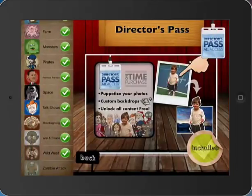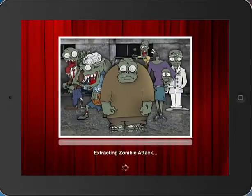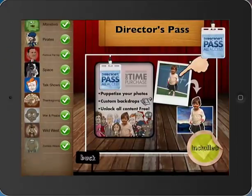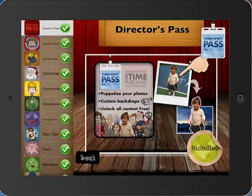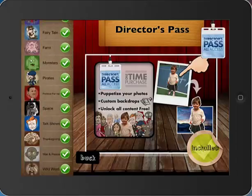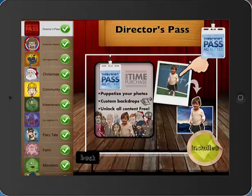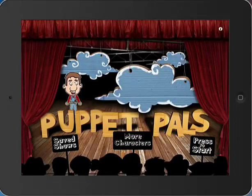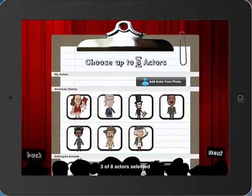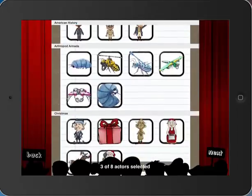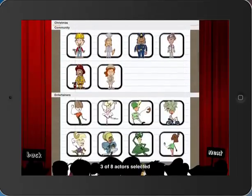The good news is that on the carts we have at school, the Director's Pass has already been purchased and installed on all of the iPads for you. So you can just go into the Puppet Pals Director's Chair option. We're all installed — I have nothing but green check marks here. Now I'm going to press to start a new show again, and as I scroll down you can see I have a lot more character options this time.